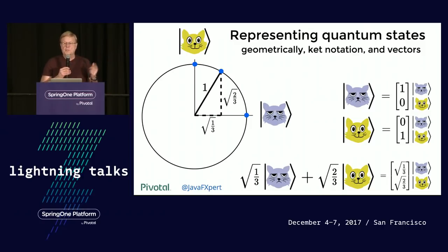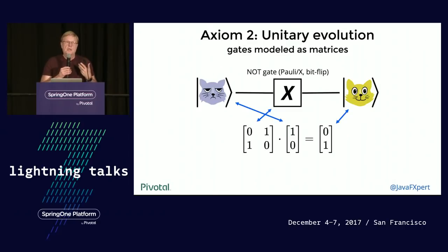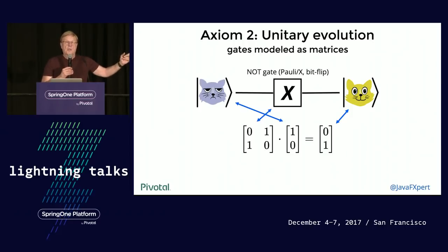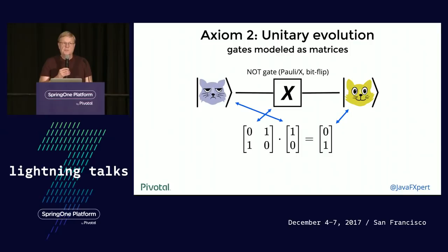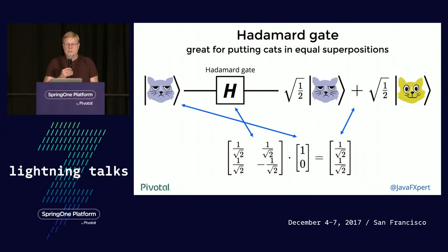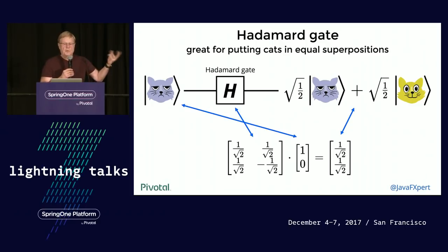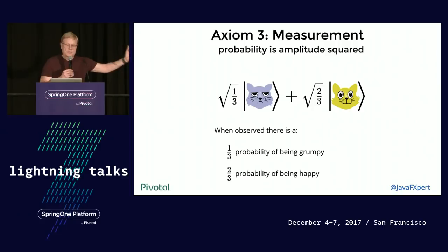Axiom number two is unitary evolution — the ability to take a quantum state and run it through gates and get another one. There's grumpy cat running through a bit-flip gate, an X-gate, and then he becomes happy. What you see below is the matrix that represents the bit-flip gate. There's also what's called a Hadamard gate, which is great for putting cats into equal superpositions — which you need for a lot of different quantum computing algorithms. And there's the matrix.